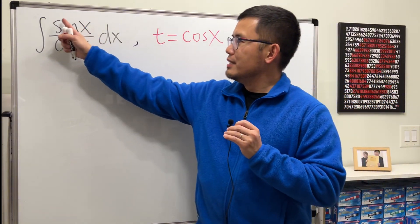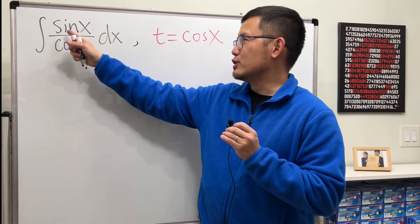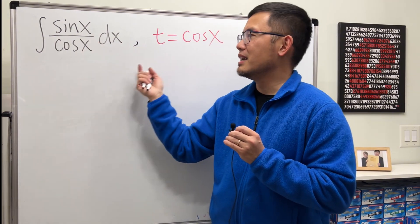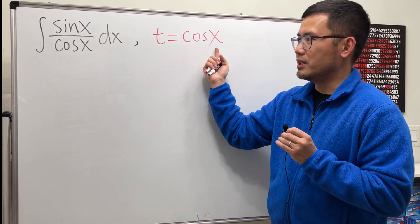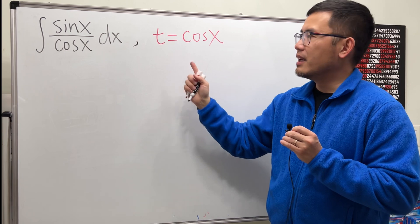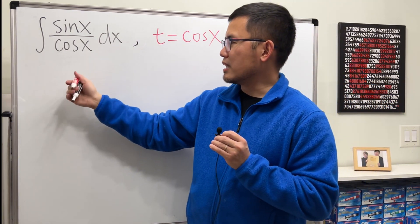First, this right here is just the integral of tangent x, and usually just write it as sin x over cosine x. That allows you to pick t to be the denominator. So this right here is t, which is on the bottom.